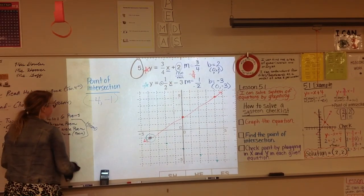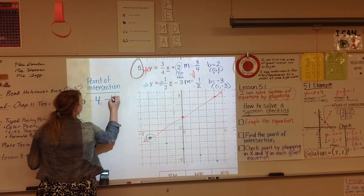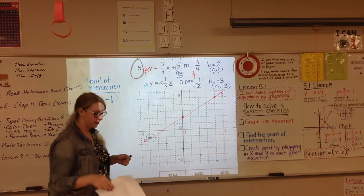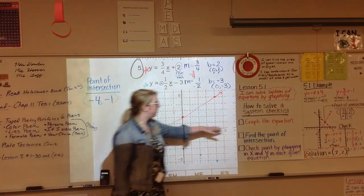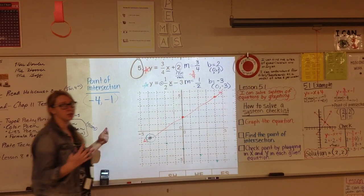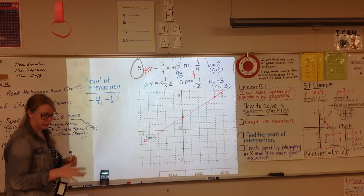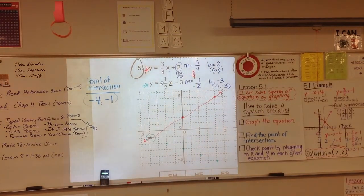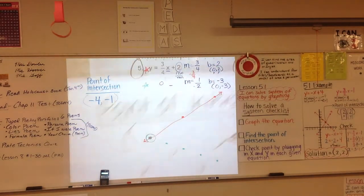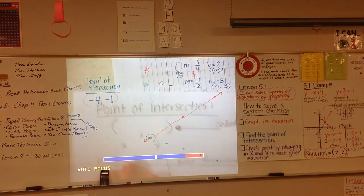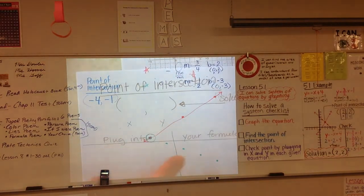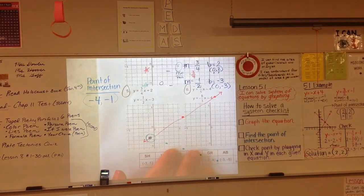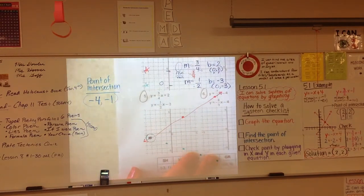Now this is important to write down. We're not finished — remember, you need to write the information on the back when checking your work. We've graphed our equations and found the point of intersection, and now we need to double-check. On the back of your paper, you want to show your point of intersection and your work of plugging it into your formulas. Make sure you're showing all of that work; otherwise it will not count and Mrs. Younger's will not take it.